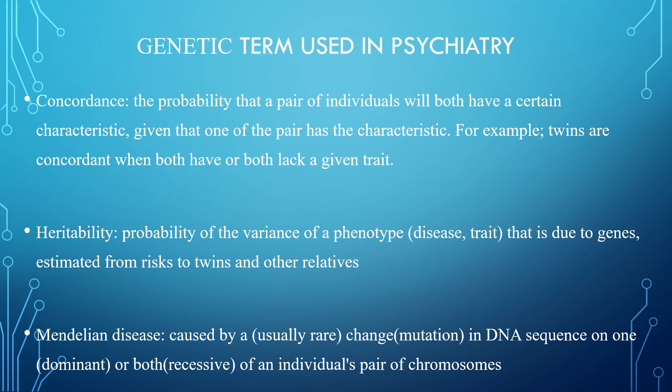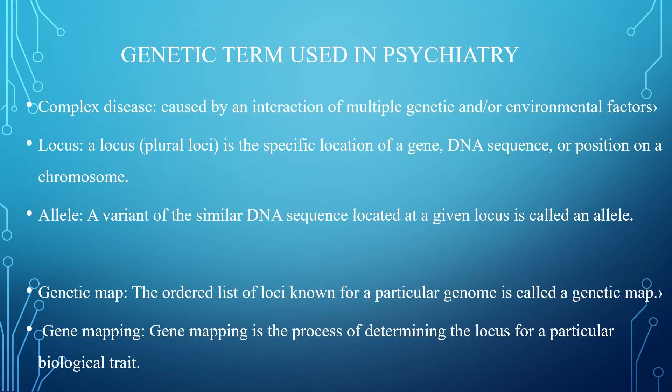Mendelian disease is caused by mutation in the DNA sequence on one or both of the individual's pair of chromosomes. Complex disease is caused by an interaction of multiple genetic or environmental factors. Most psychiatric illnesses are complex diseases. Locus is the specific location of a gene, DNA sequence, or position on a chromosome. An allele is a variant of a similar DNA sequence located at a given locus. The ordered list of loci known for a particular genome is called a genetic map. Gene mapping is the process of determining the locus for a particular biological trait; it identifies genes responsible for disease and also genes responsible for other traits.